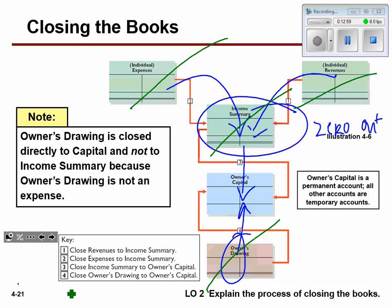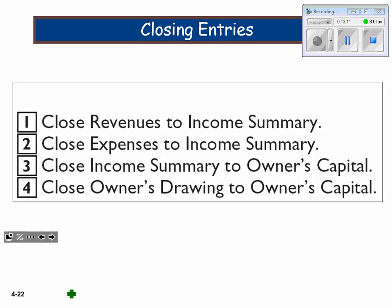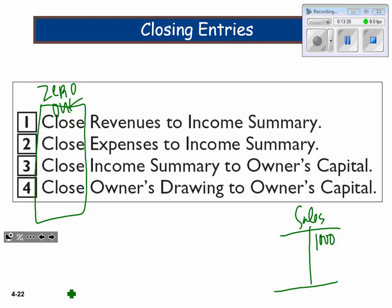There is a certain way you do this, and here is the process. First, we close revenue into income summary. Second, we close all the expenses also into income summary. Third, we close income summary into capital. And then don't forget — close drawing into capital as well. When we close revenue, that will be the debit side. So income summary has to be a credit. When we close expenses, all of those will be credits — so income summary would have to be a debit.